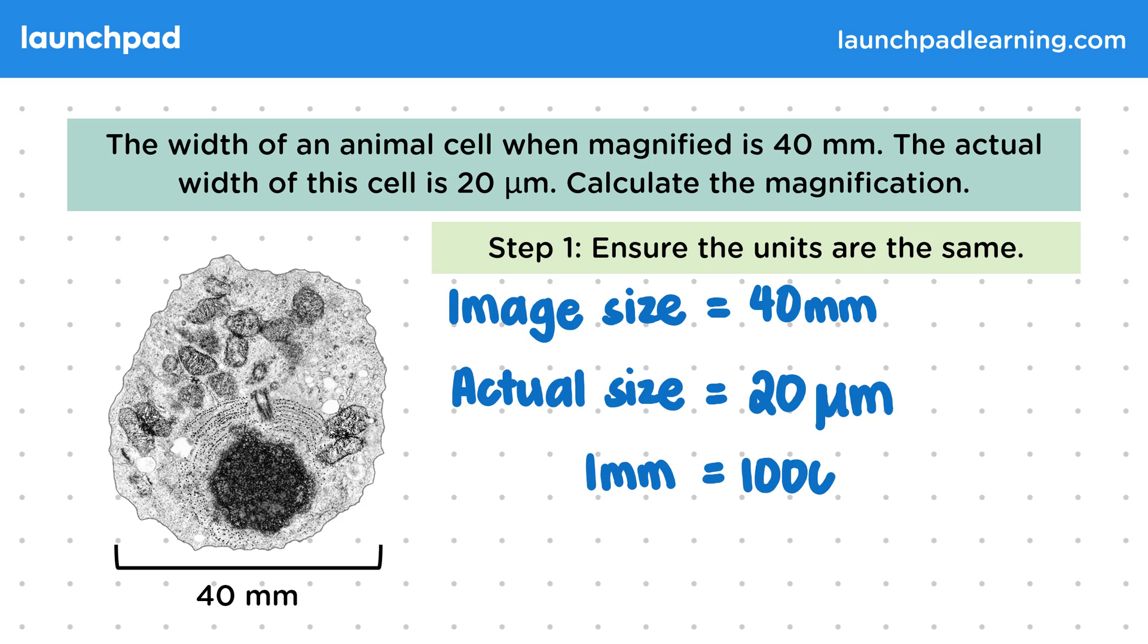Because 1 millimetre equals 1000 micrometres, to find out the actual size of the cell in millimetres, we do 20 divided by 1000, which gives us 0.02 millimetres. You can change either of these units as long as they both end up being the same. For your exam, you need to be able to convert between centi, milli, micro and nano units.